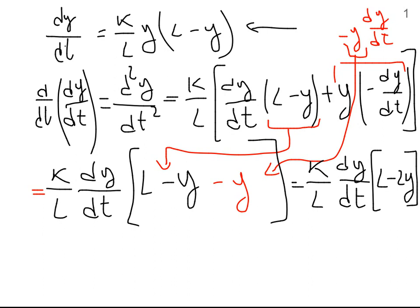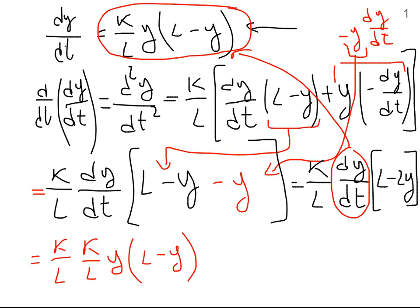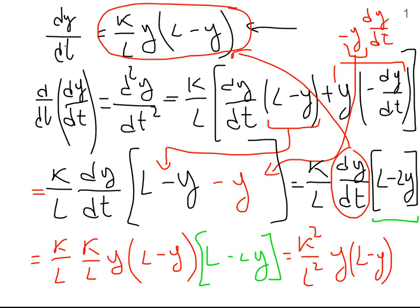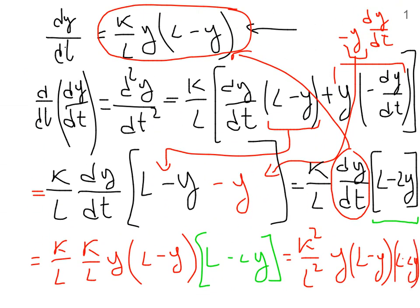But we know that dy over dt is equal to k over l times y times l minus y. So we can rewrite the final result as kl times dy over dt times l minus 2y. And we can finally write this as k squared over l squared times y times l minus y times l minus 2y. I don't have much space, but I think you got the final result. So this is it — it was not too bad.